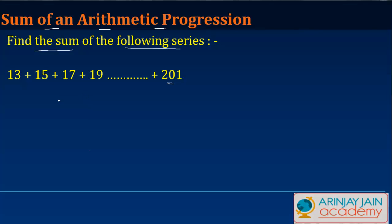In the previous video, I explained that the sum of an arithmetic progression can be written as n by 2, times 2a plus n minus 1 times d.